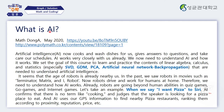What is artificial intelligence? I wrote a series of articles for about one and a half years that you can take a look at from this web address. Artificial intelligence now cooks and washes dishes for us, gives answers to questions, and takes care of our schedules. We now need to understand AI and how it works. So the goal of this course is to learn linear algebra, calculus, and statistics — particularly singular value decomposition, gradient descent method, principal component analysis, ANN, and backpropagation — needed to understand artificial intelligence.